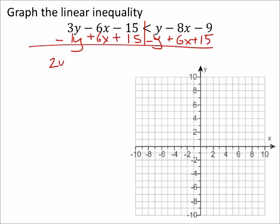So this gives me 2y is less than, because this is a 0. Negative 8 plus 6 is a negative 2x. And negative 9 plus 15 is a positive 6.